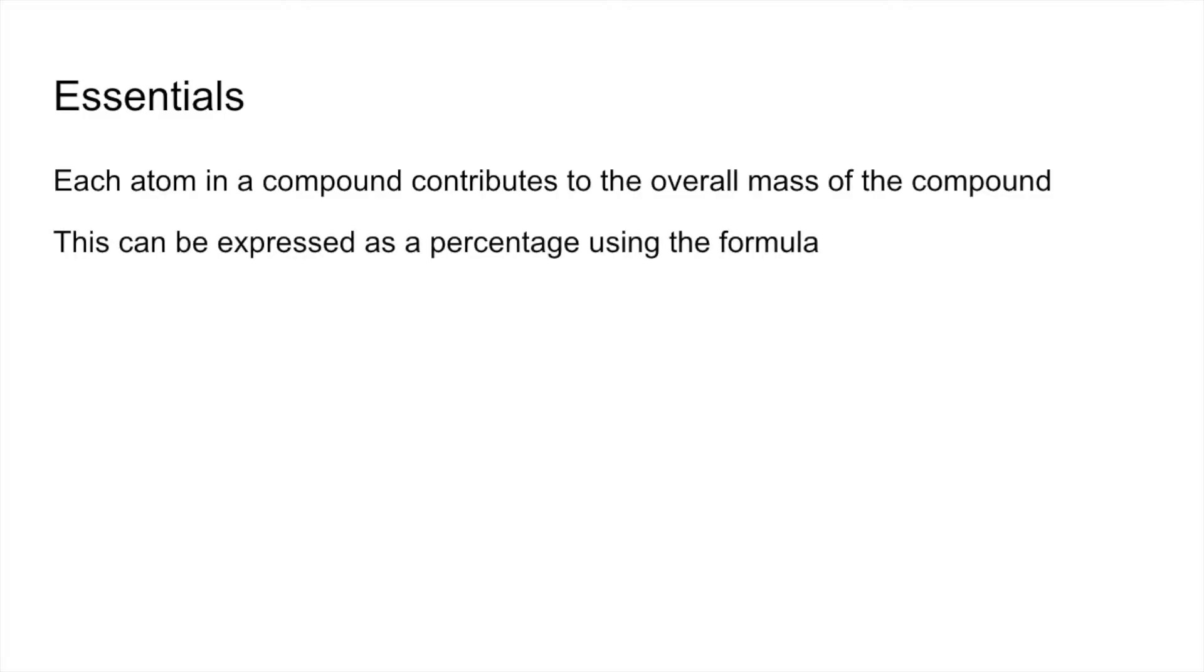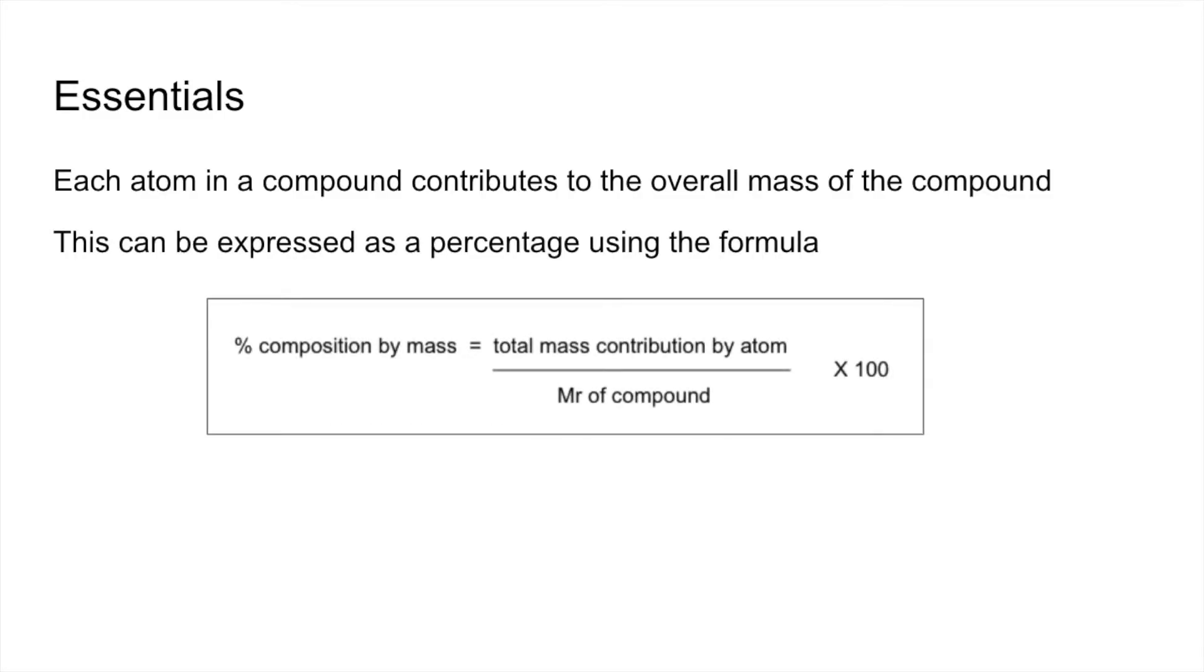This can be expressed as a percentage using the formula: percentage composition by mass equals total mass contribution by the atom divided by the MR of the compound times 100.